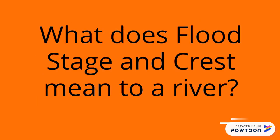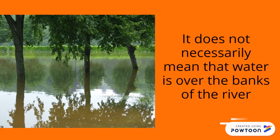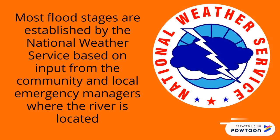Geography Minute. What does flood stage and crest mean to a river? A flood stage is a water level at which some type of physical or economic hardship occurs along a river. It does not necessarily mean that water is over the banks of the river. Most flood stages are established by the National Weather Service based on input from the community and local emergency managers where the river is located.